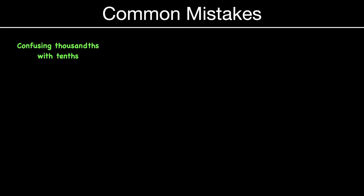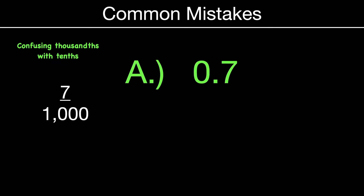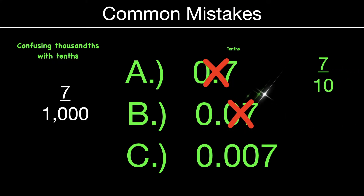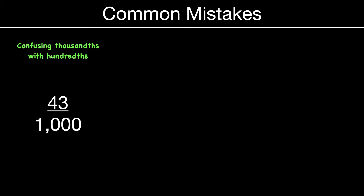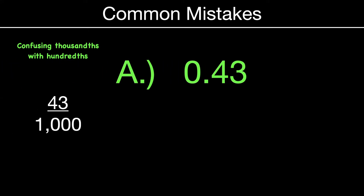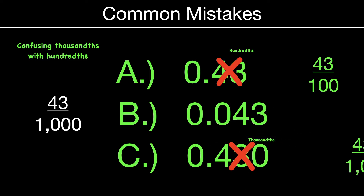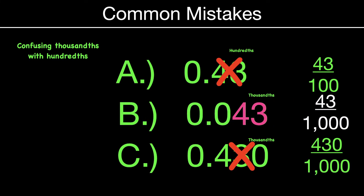Here are some common mistakes students make. One big one is confusing thousandths with tenths. If you had the fraction seven thousandths and wanted to show it in decimal form, is it A, B, or C? Not A — that's seven tenths. Not B — that's seven hundredths. The answer is C because the seven is in the thousandths place value. Another mistake is confusing thousandths with hundredths. For forty-three thousandths: not A — that's forty-three hundredths. C is closer, but that's four hundred thirty thousandths. The correct answer shows forty-three thousandths — it's a bit tricky.